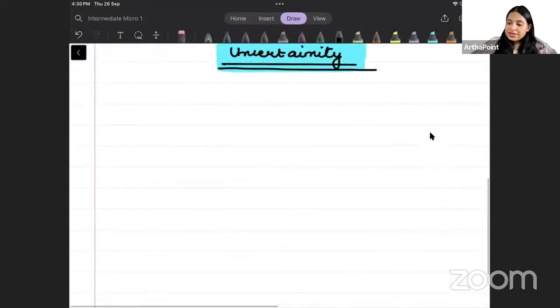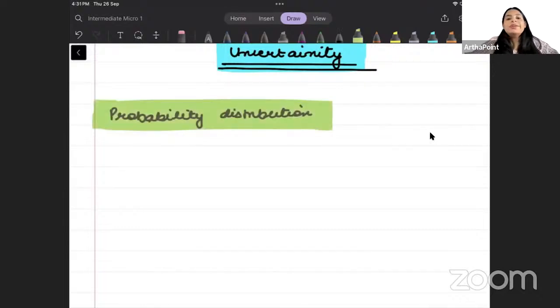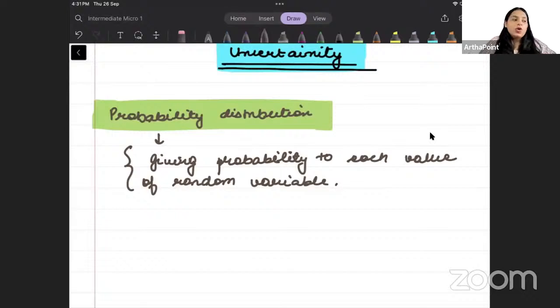50% chance hai it will rain, 50% chance hai it will not rain. 90% chance hai ki I will reach home safely if I drive properly. Jabhi bhi uncertainty hogi, there would be presence of probability. Therefore, hum ek term introduce karte hai, jo statistics mein padhaaya jaata hai, which is called as probability distribution.